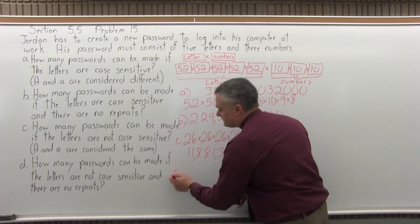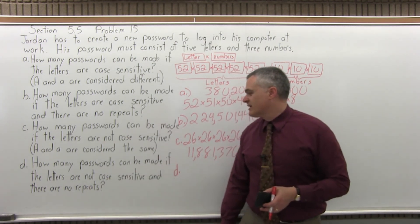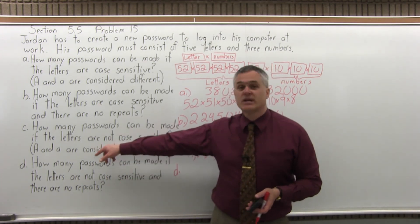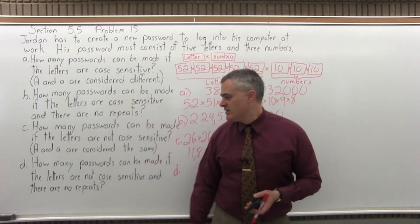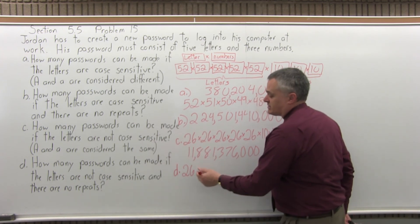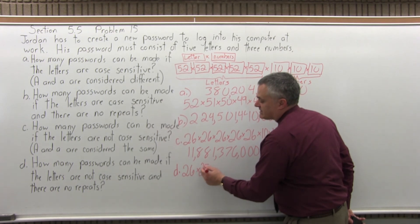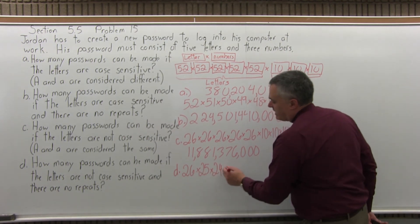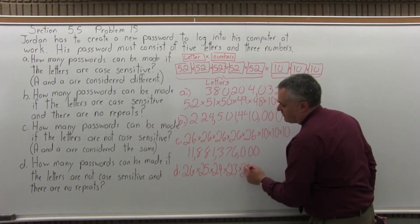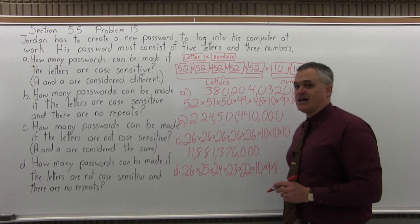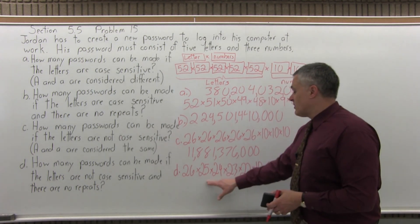Finally, Part D: how many passwords can be made if the letters are not case sensitive and there are no repeats? Capital A and lowercase a are considered the same letter, but there are no repeats. So on the first choice for your five letters you have twenty-six options, but with no repeats on the second choice you have twenty-five, then twenty-four for the third, twenty-three for the fourth, and twenty-two for the fifth. Then for your numbers you still have ten choices for the first number, but with no repeats you're down to nine, then eight for the last.